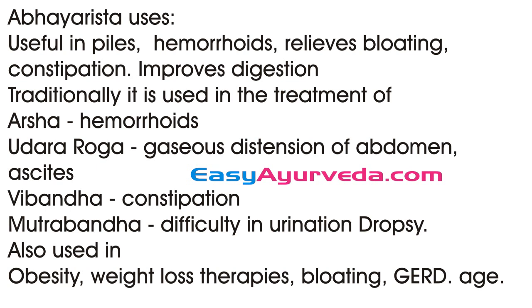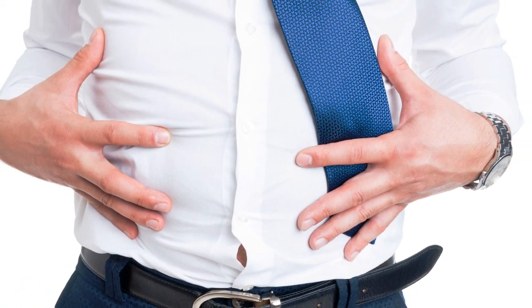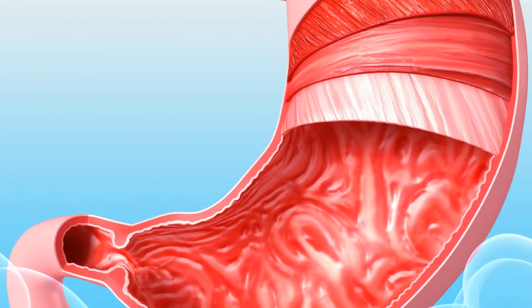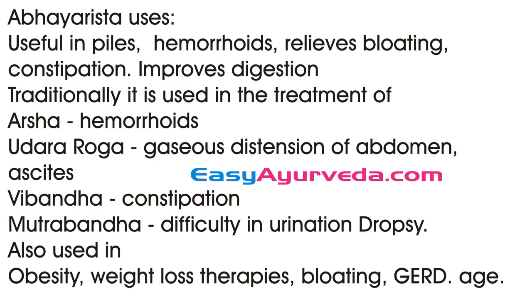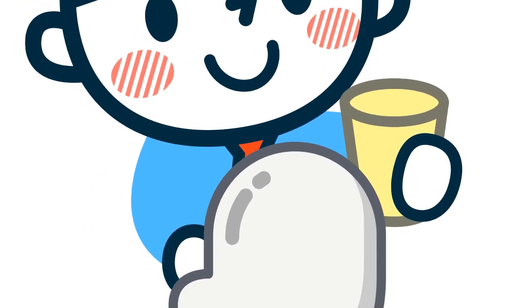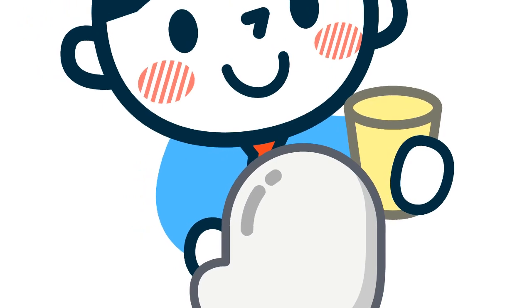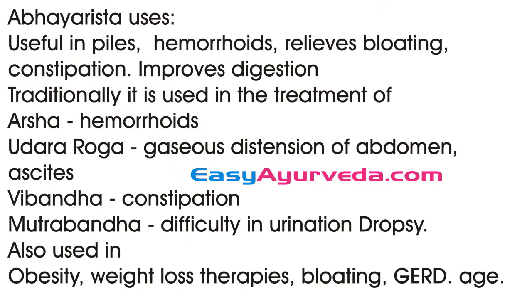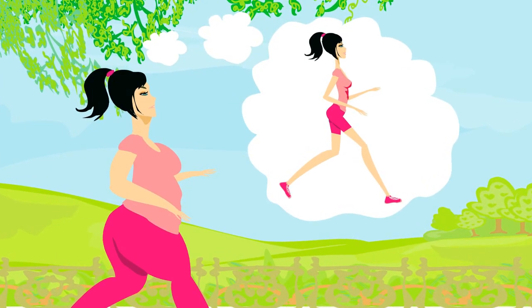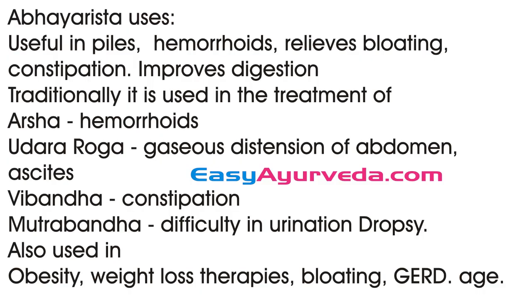Coming to the uses and indications of Abhayarista: it is useful in the treatment of piles and hemorrhoids, it relieves bloating and constipation, and it improves digestion strength. Traditionally it is indicated in the treatment of hemorrhoids, gaseous distension of the abdomen, ascites, constipation, difficulty in urination, and dropsy. Doctors also use this medicine for obesity, weight loss therapies, bloating, gastroesophageal reflux disorder, and gastritis.